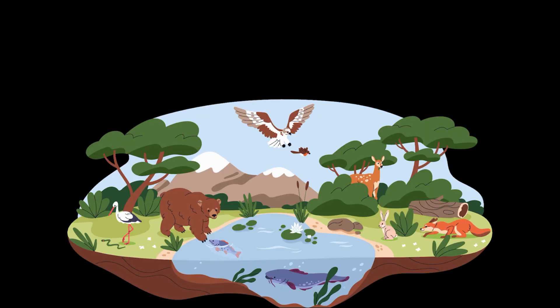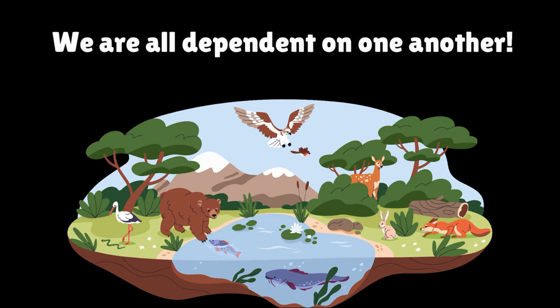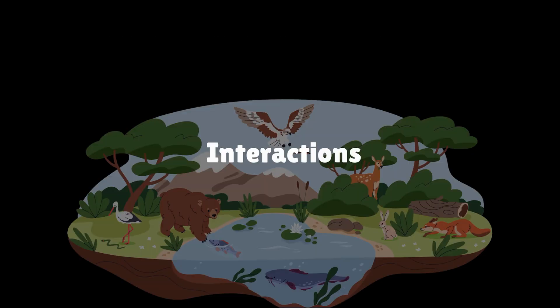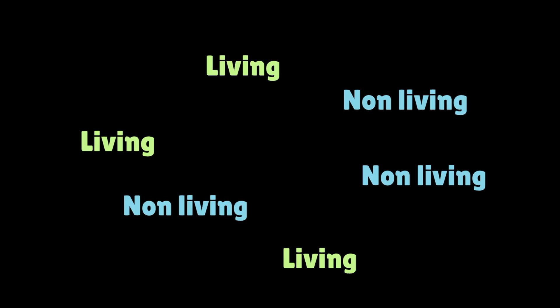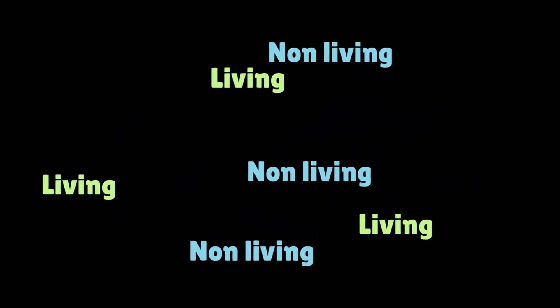So you see where I am going with this? By being members of this beautiful planet, we are all dependent on one another, and we show this dependence by constantly interacting with one another. In simple terms, every part of this planet, be it living or non-living, is always bumping into one another and affecting each other, often without even realizing.